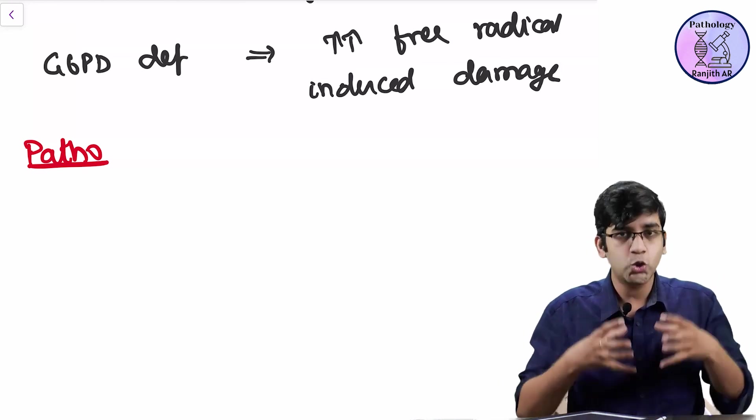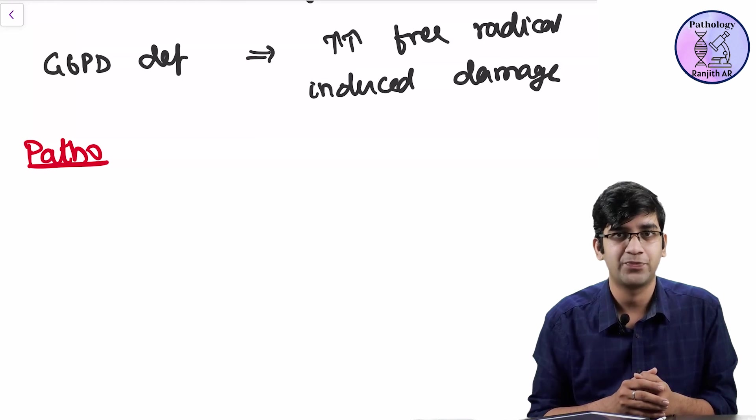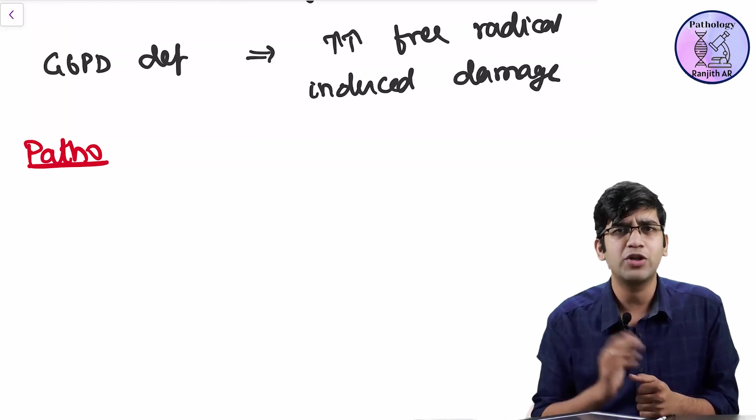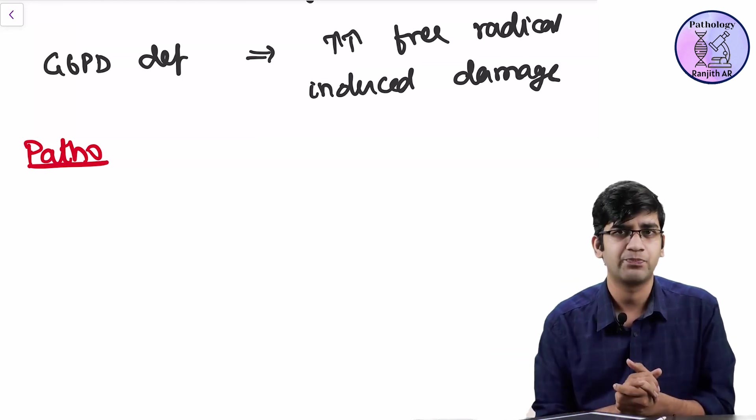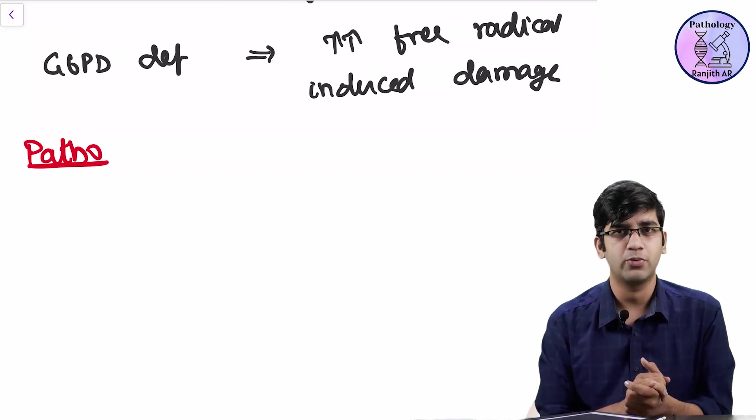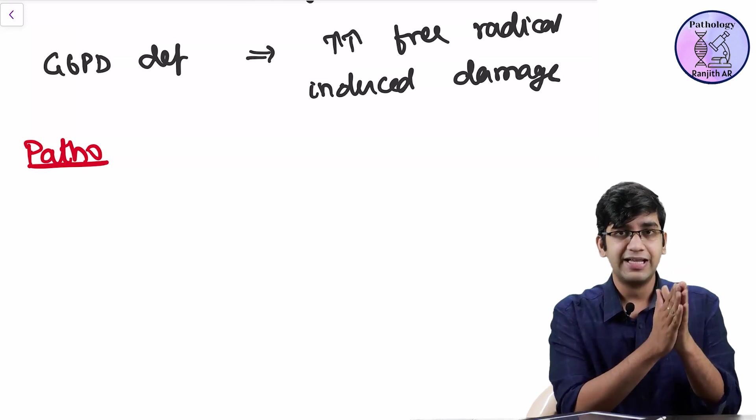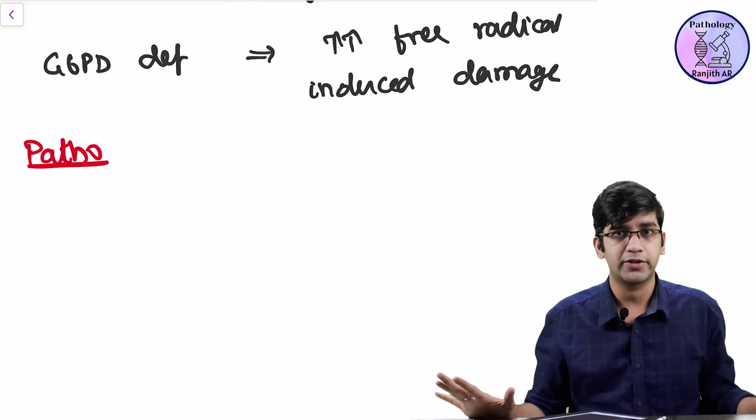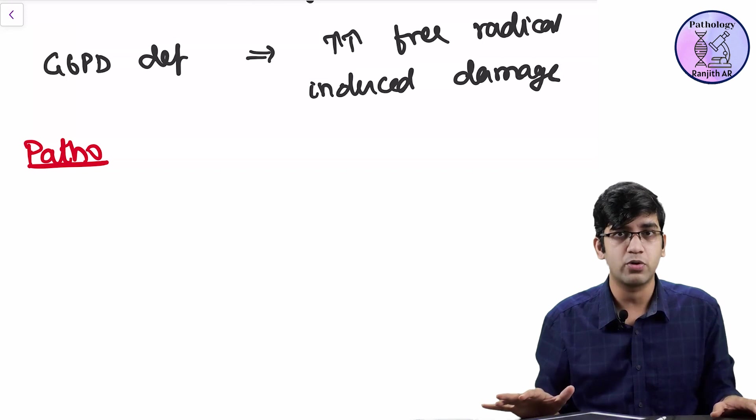So my free radical also destroys proteins. Right? So what is the predominant protein in my RBC? Obviously hemoglobin. Globin component of hemoglobin is a predominant protein. So what happens here is, the free radical is going to destroy a globin product. It's going to destroy a protein product.